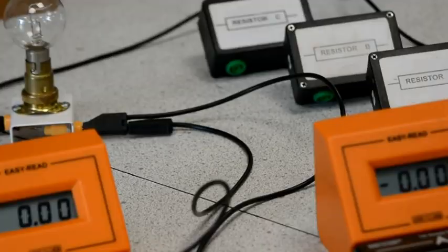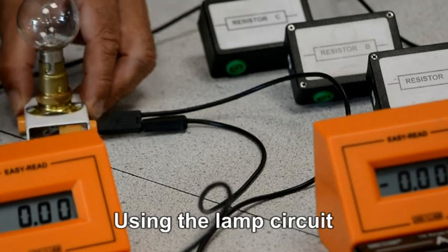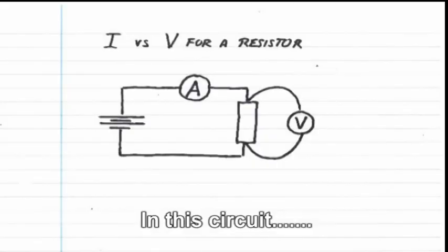Another of the core practicals, this time the I versus V graph for a resistor. You'll remember that we'd already built the circuit for a lamp and now we're going to replace that lamp with this circuit, replacing the lamp with resistor, resistor A in this case.